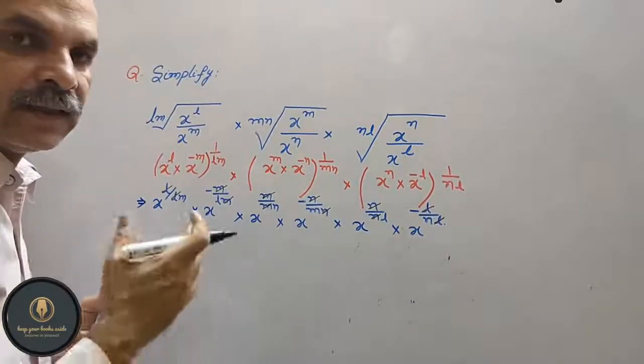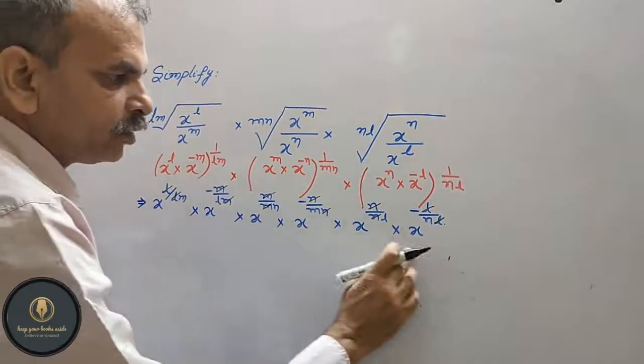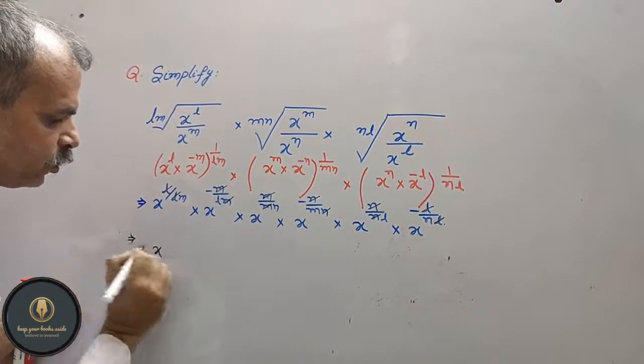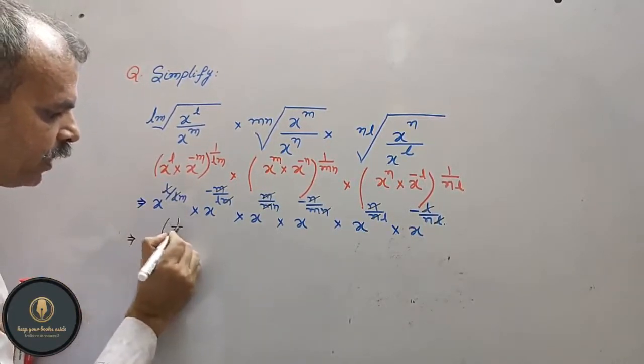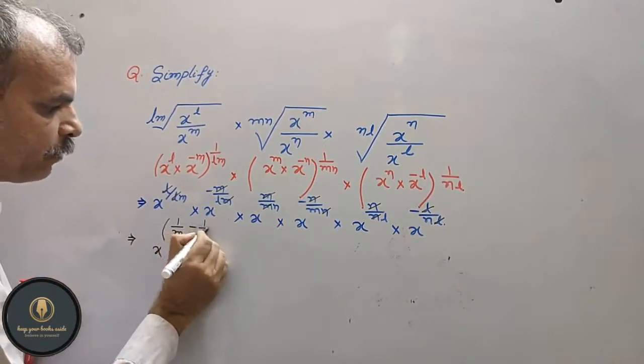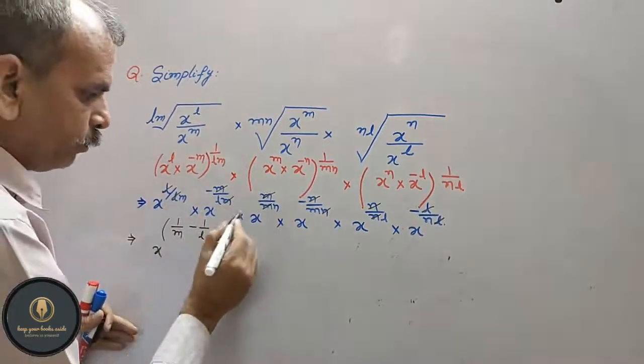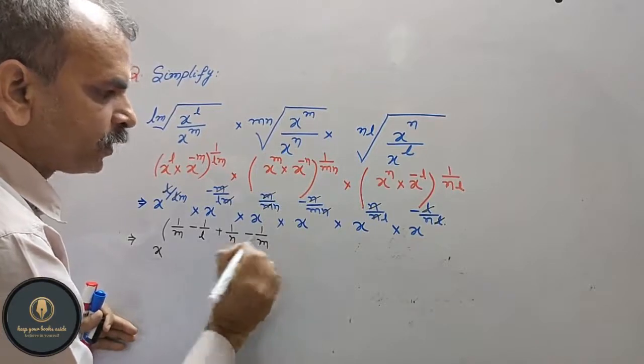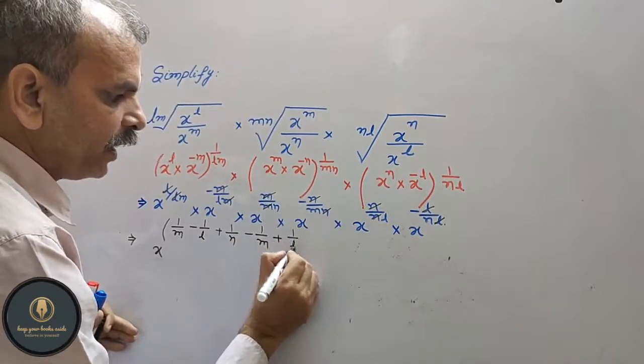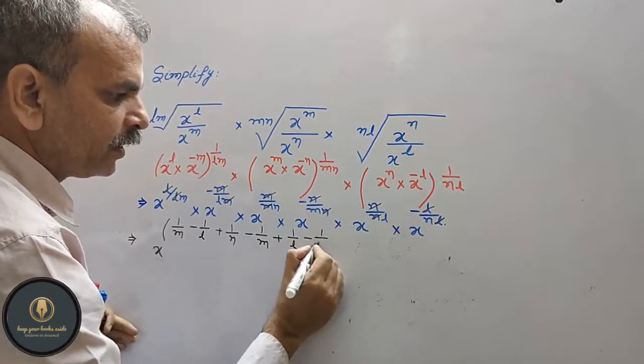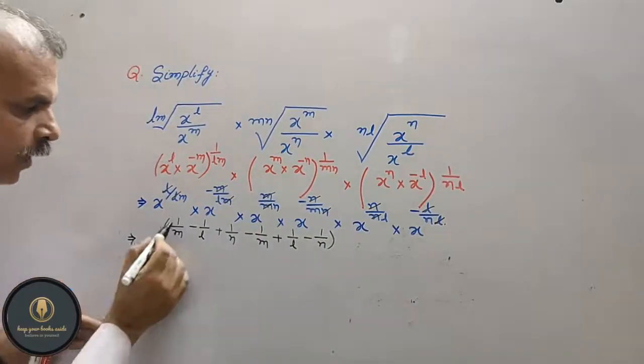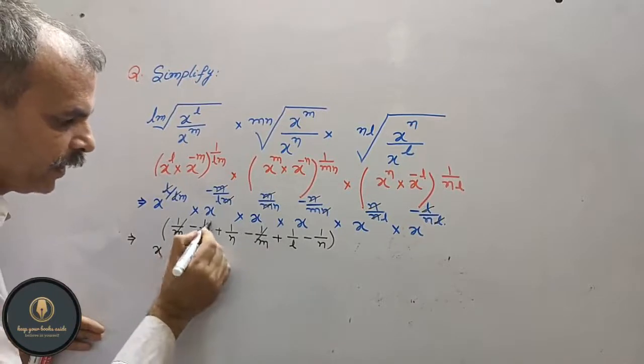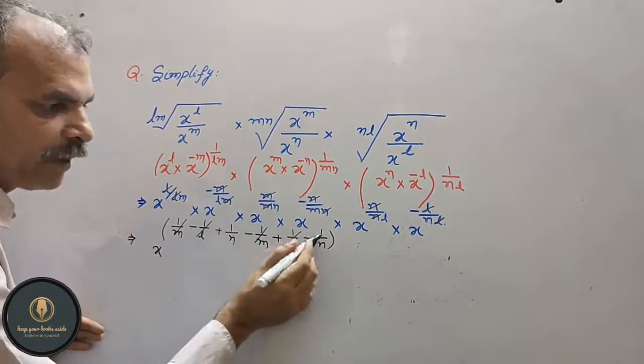Now what value do we get? We write all x terms together: x to the power of... what is here? 1 by m, here is minus 1 by l, next plus 1 by n, next minus 1 by m, next plus 1 by l, minus 1 by n. Now, 1 by m minus 1 by m gets cancelled. Minus 1 by l and plus 1 by l gets cancelled. Plus 1 by n and minus 1 by n gets cancelled.